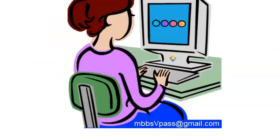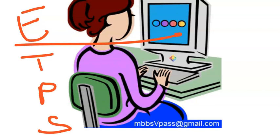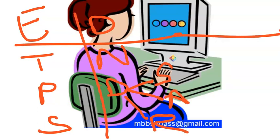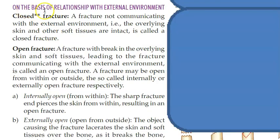Based on etiology you saw traumatic, pathological, and stress fractures. Based on displacement you have undisplaced and displaced — and under displaced there is shift, angulation, and rotation. Now there are more classifications: simple fracture, compound fracture, and based on the shape in which the fracture occurred. Then you have closed fracture and open fracture.